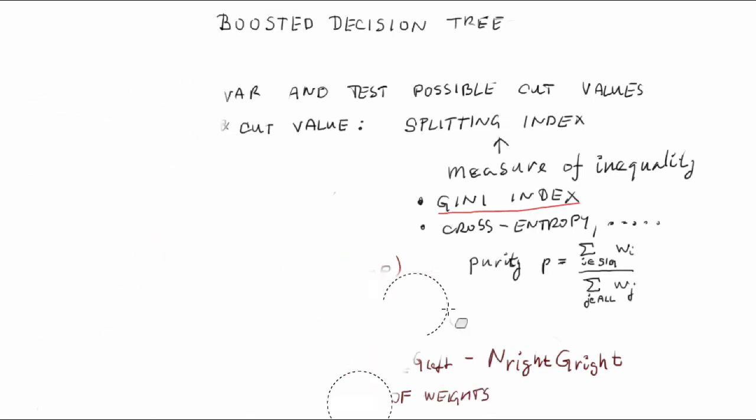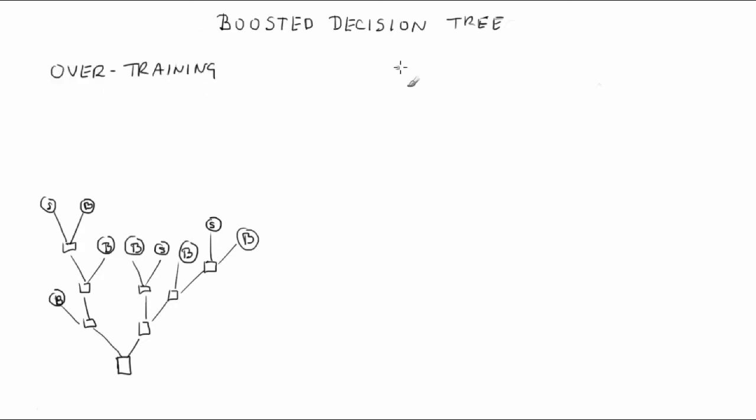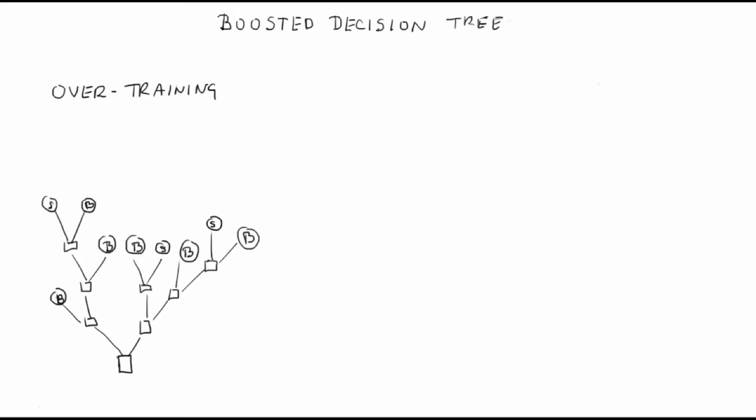Now we know how to split a block into two. In principle, we could keep splitting blocks until each of them contained just signal or just background events. However, such a decision tree would be highly overtrained. Very likely, there would be many blocks containing just one event. To avoid this, we need to define some stopping criterion that saves a block from being split.